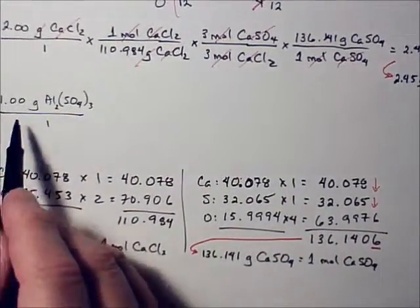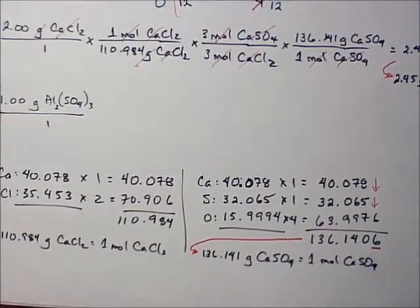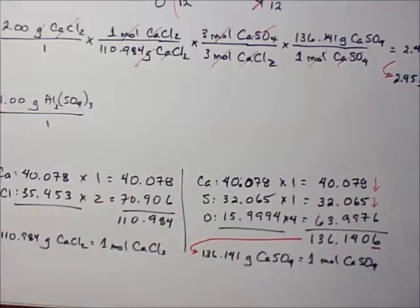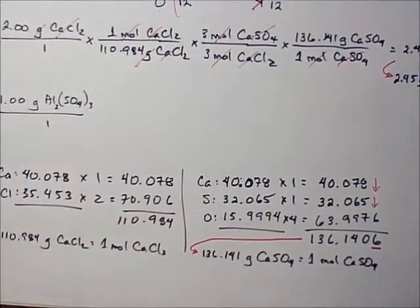The next one is to do the same calculation with the starting amount of aluminum sulfate. I've shown you how to do it. Now you do the next one. Finish this problem, the rest of this problem here.